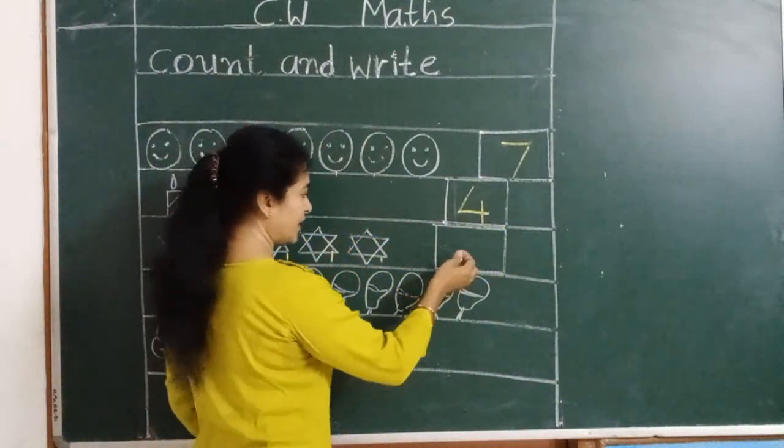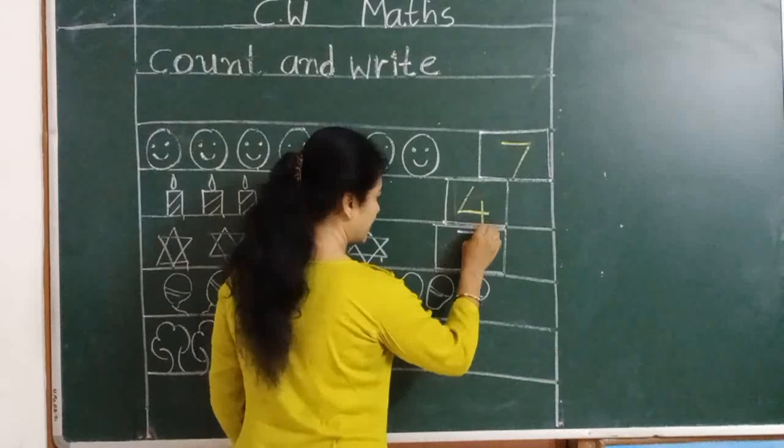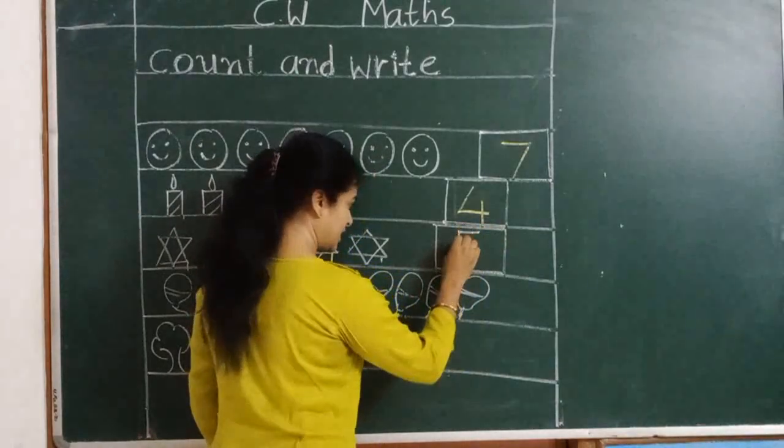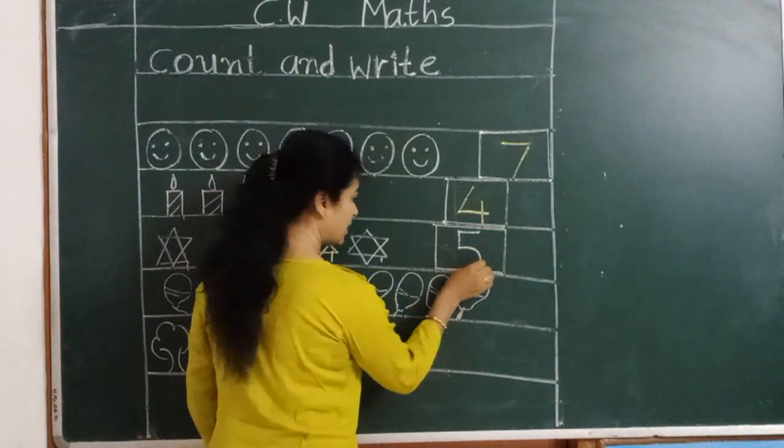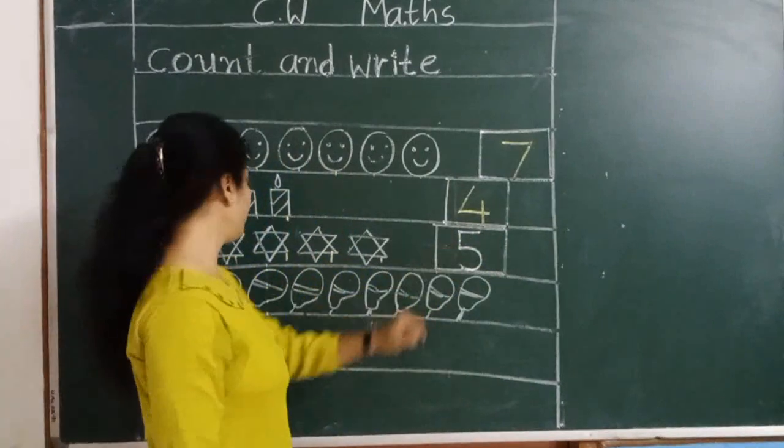How can we write number 5? Slipping line, small standing line and a curve. Next number 5.